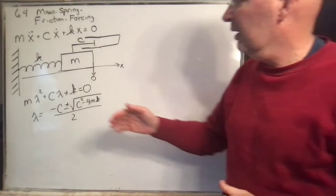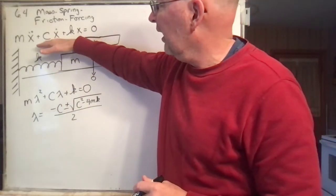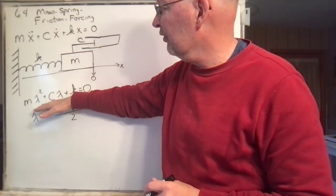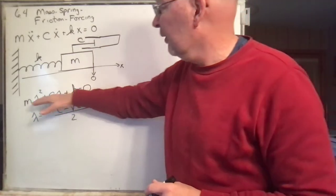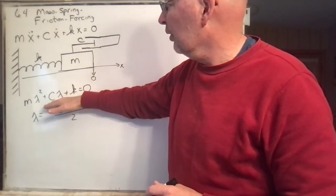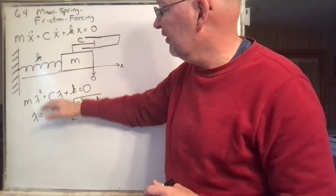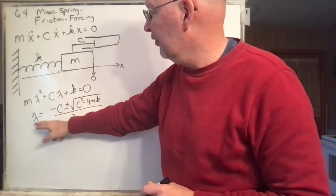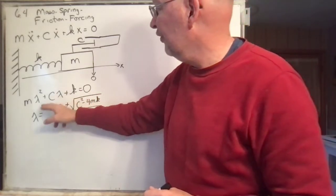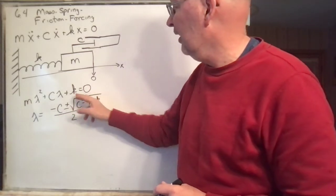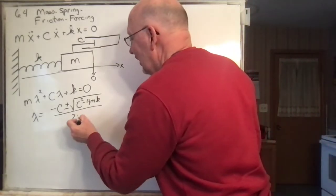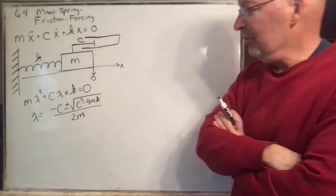So, first of all, let's look at this equation. How do we solve that? We know how to solve it now — we first get the characteristic equation. Then we need to find the values of lambda that make that zero. Since it can't be factored, we use the quadratic formula. The values of lambda are negative c plus or minus the square root of c squared minus 4 times m times k, all over 2m.